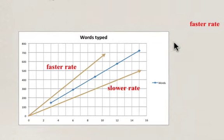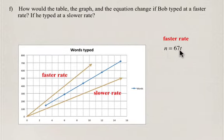And so the faster rate, for example, here, this is n equals 67t. Because if he types 200 words at 3 minutes, that's about 67 words per minute. So the equation is n equals 67t. So the rate, the slope is greater. So we're going to have a larger number than 48 if he's able to type more than 48 words per minute. So here he can type 67 words per minute. If he types at a slower rate, then the coefficient or m is going to be a lower number.